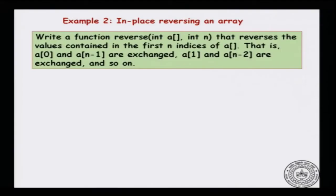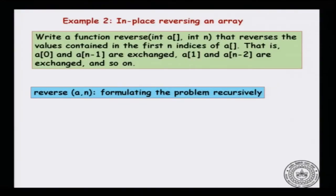Let us look at an example that we have seen before, which is reversing an array in place. We had to reverse an array 'a' with n elements, and it is supposed to reverse the values contained in the first n indices. That is, a[0] is exchanged with a[n-1], a[1] is exchanged with a[n-2], and so on. We have to do approximately n/2 exchanges. Let us look at the problem recursively — we had earlier solved it using loops.